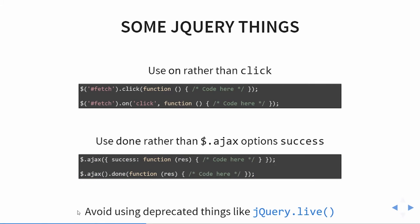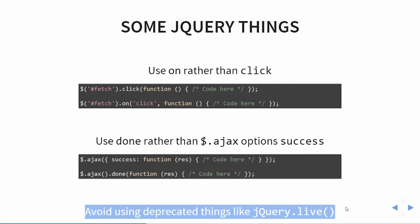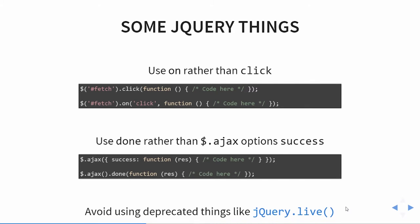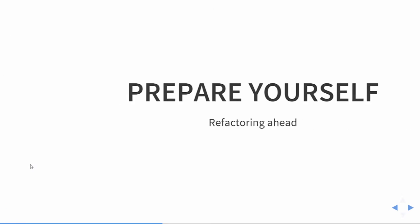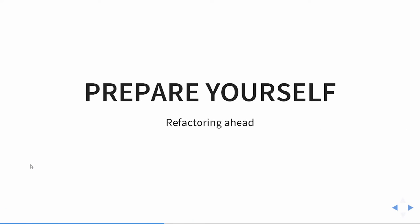General good programming practice: don't use deprecated things. jQuery .live() was deprecated — stop using it. There's an easy workaround available on the jQuery site. Now that we've got the softballs out of the way, we'll move into the actual meat of the talk.